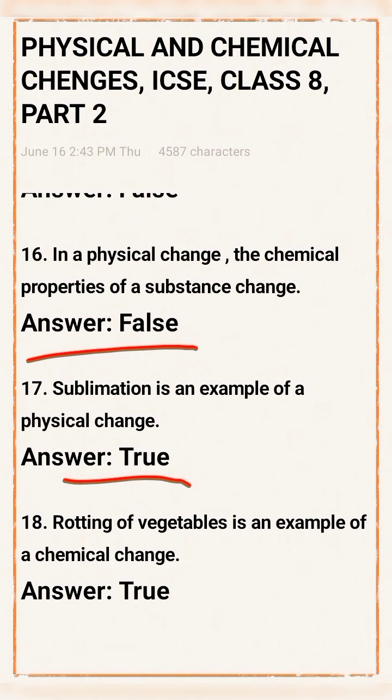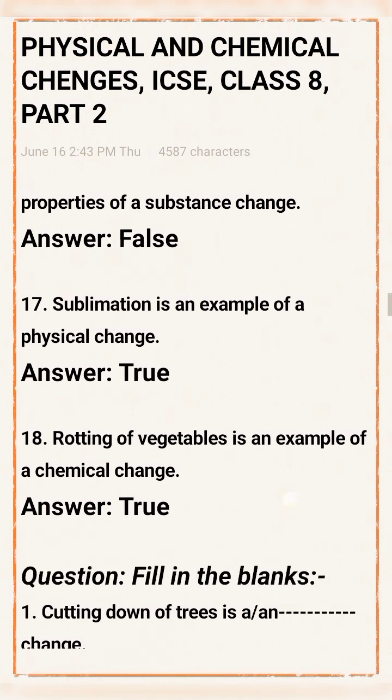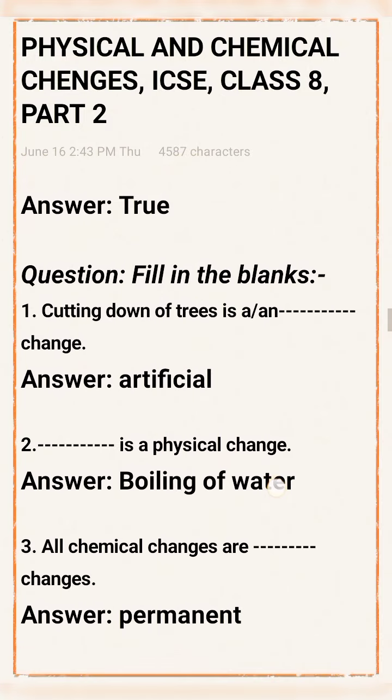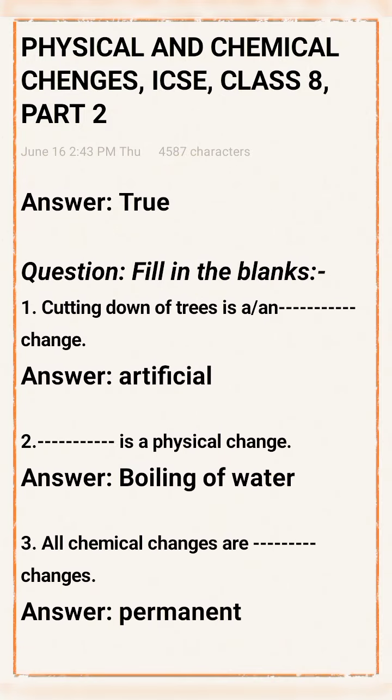Question 18: Rotting of vegetables is an example of a chemical change — this statement true. Now the next question pattern: Fill in the blanks.